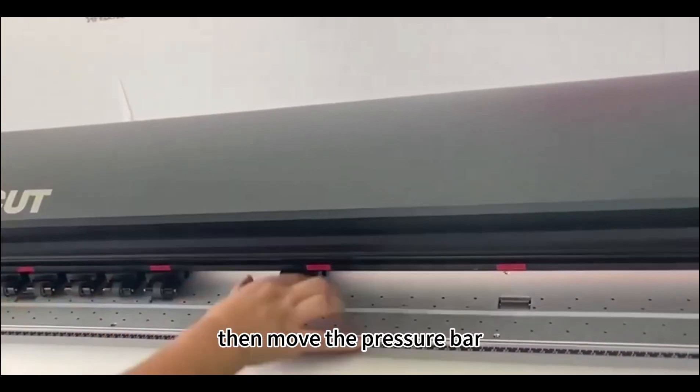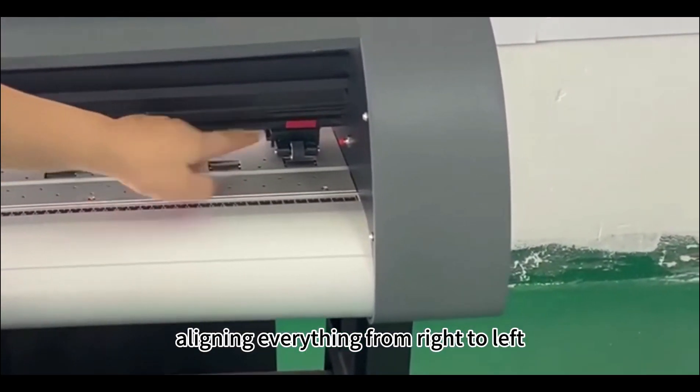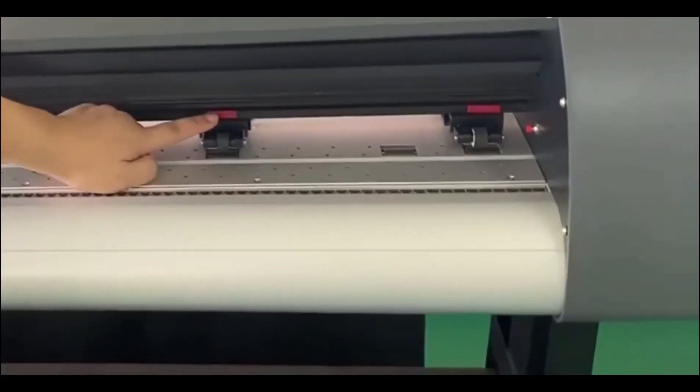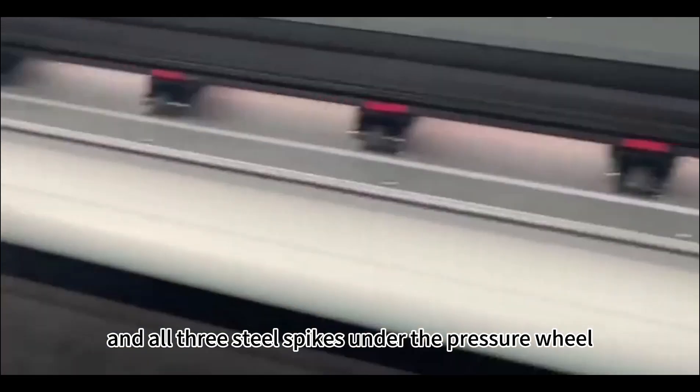Then move the pressure bar directly underneath the red label on the machine, aligning everything from right to left. Note that the second position doesn't need pressing. Ensure the red label is visible and all three steel spikes under the pressure wheel are aligned.